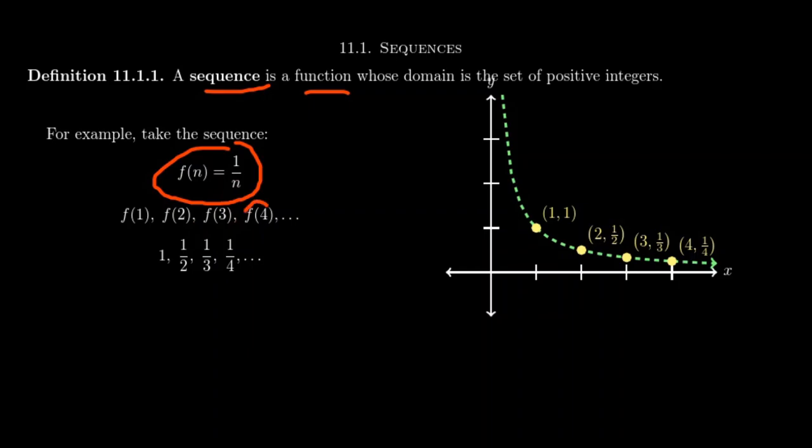Continuing on, f of 4, we would plug in 4 as we evaluate this function, and hence the fourth number in this sequence would be one-fourth. This sequence can continue on and on. We get one-fifth, one-sixth, one-seventh, one-eighth, and this continues on as far as we want to go.